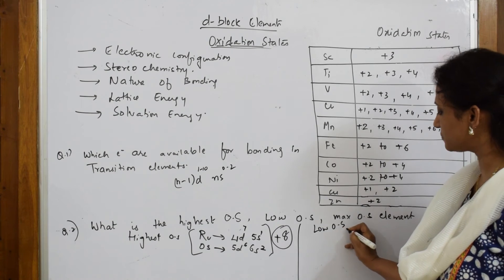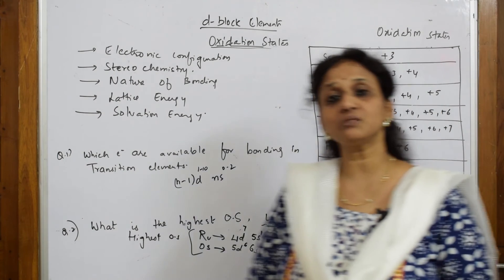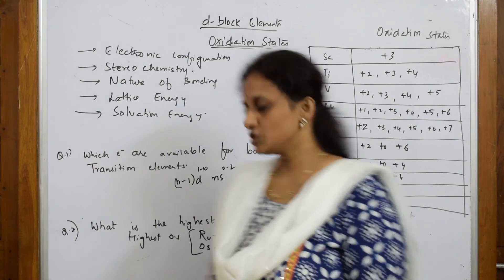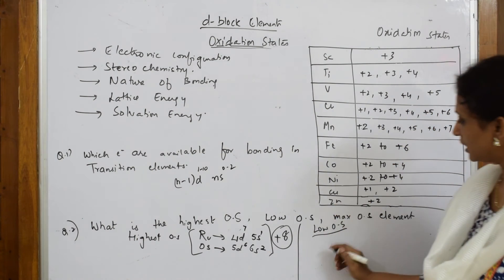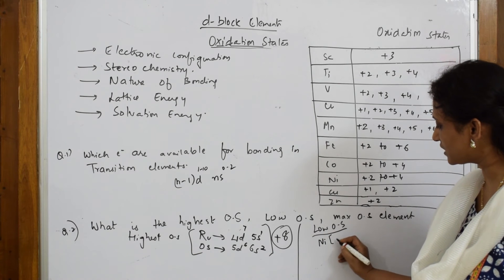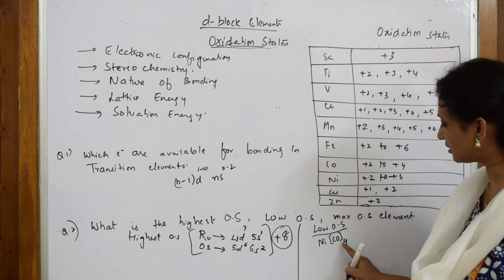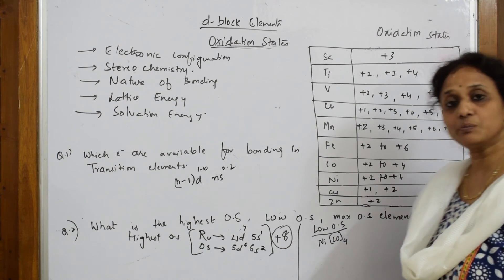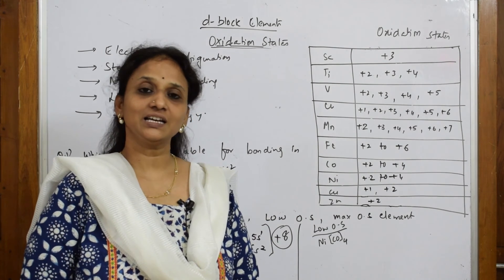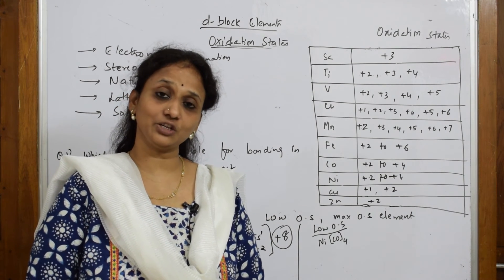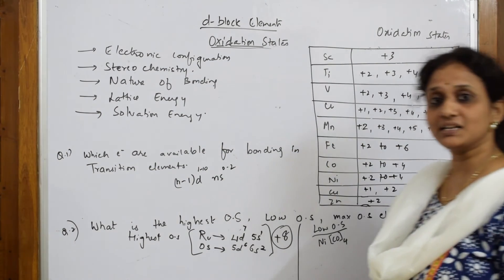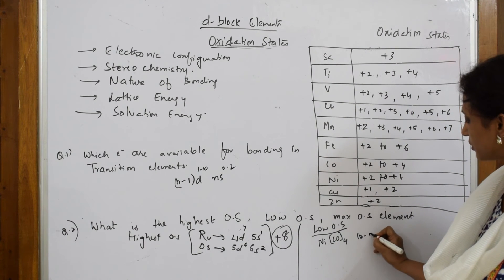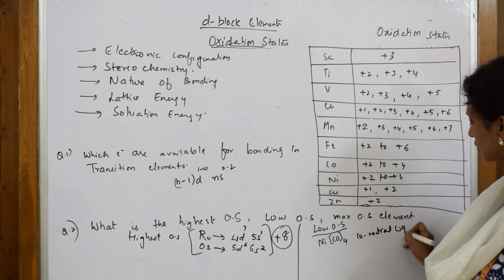Now lowest oxidation state. This is shown by transition metal complexes in coordination chemistry where we speak about coordinate covalent complexes. The lowest oxidation state is shown by nickel in nickel tetracarbonyl. This is a complex where carbonyl group is a neutral ligand. When it's a neutral ligand, the charge on ligand is 0.